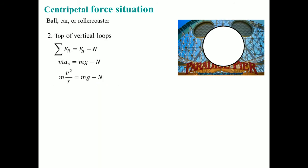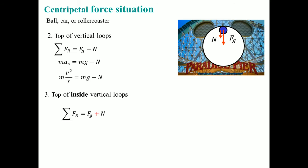The next situation arises from the top of the inside of the vertical loop. When the object is on top of the vertical loop on the outside, we saw it was F_G minus N, and the force of gravity was longer. But when the object is on the inside of the vertical loop at the top, the force of gravity is still pushing down, and the normal force is also pointing downwards. So rather than subtraction, it is addition — the normal force and gravity act together when the object is on the inside of the top of the vertical loop.